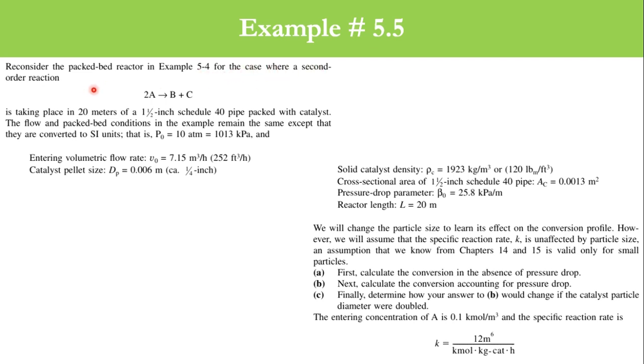In Example 5.4, for the case where a second-order reaction, 2A goes to B plus C, is taking place in 20 meters of 1.5-inch schedule 40 pipe packed with catalyst. The flow and packed bed conditions in the example remain the same except they are converted to SI units, such as initial pressure is 10 atm,